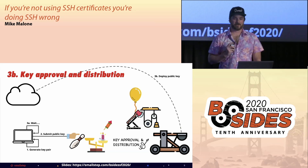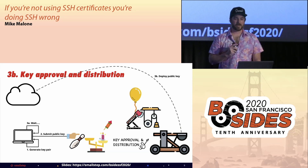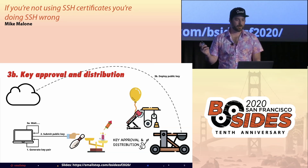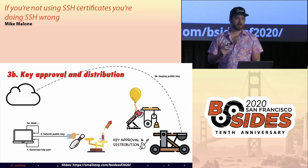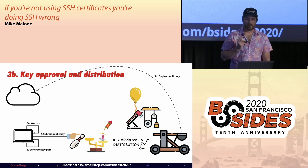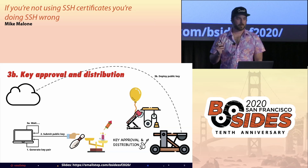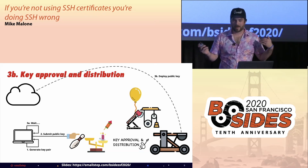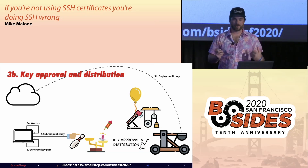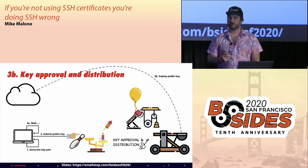For simple public key authentication to work, your public key needs to be in an authorized_keys file on every server. Most likely, someone has to add your key to a manifest in some repo and trigger a deploy. There may be some automation around this process, but it's usually shoestring and bubblegum. And remember that the security of this entire pipeline is absolutely essential to the security of your system.